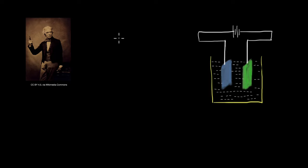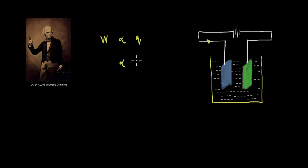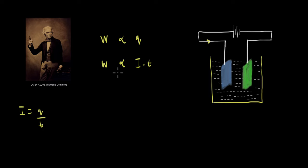The first thing to note is that the weight deposited will be proportional to the charge through the electrode. Instead of thinking of this charge, if you look at this circuit, you can think in terms of the current through the circuit. So the weight or amount of deposition will be proportional to the current i times the time t. We can write this as w = z × i × t.